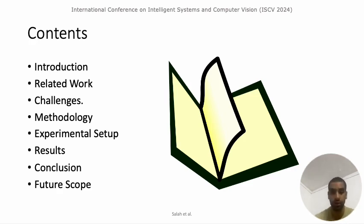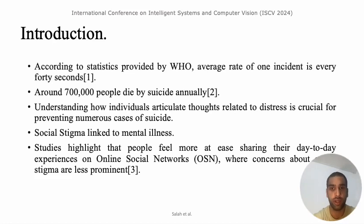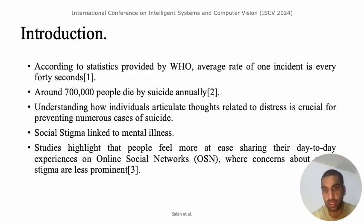So let's go with the introduction. Suicide is a kind of disease, and according to statistics provided by the World Health Organization, the average rate is one incident every 40 seconds — that means in every 40 seconds there is one case of suicide attempt. Around 700,000 people die by suicide annually, and understanding how individuals articulate thoughts related to distress is crucial for preventing numerous cases of suicide.